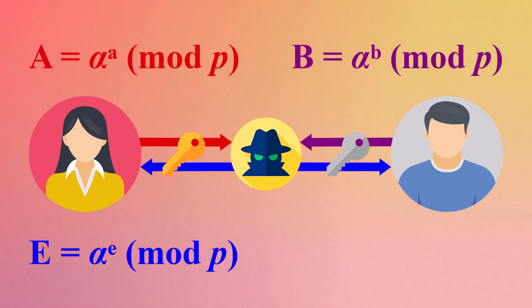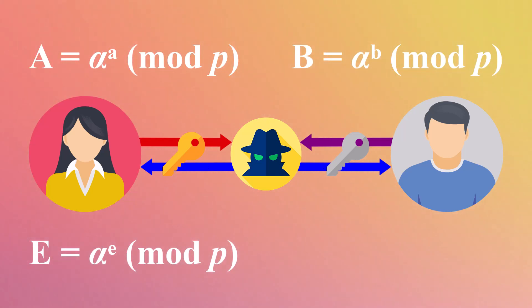As a result, Eve can read messages between Alice and Bob undetected. Worse yet, she can modify their content without their knowledge. Let's look at a scenario where we apply the man-in-the-middle attack.